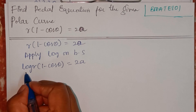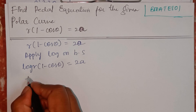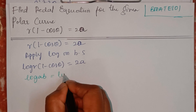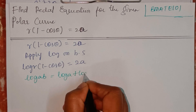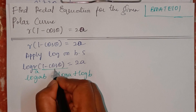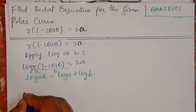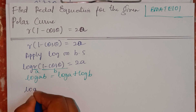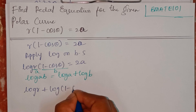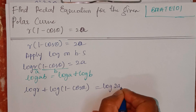Now we will expand this. We already know log(A into B) is nothing but log A plus log B. So this becomes log R plus log(1 minus cos theta) is equals to log 2a.